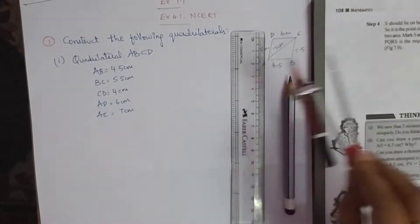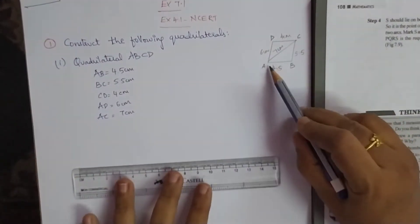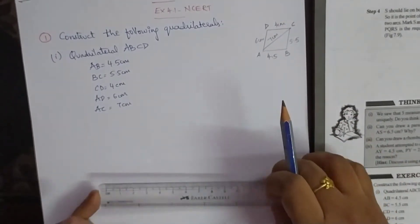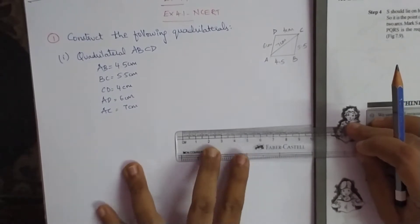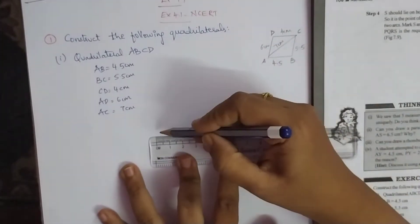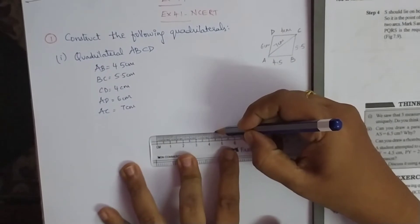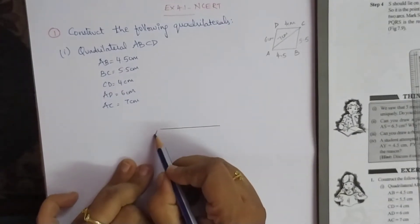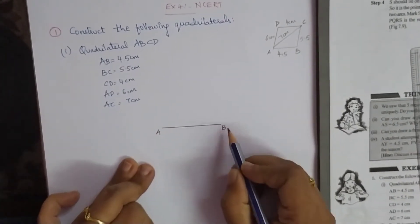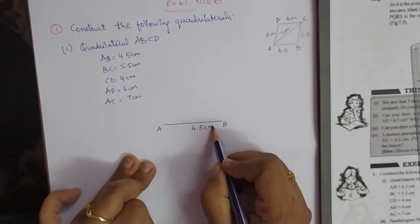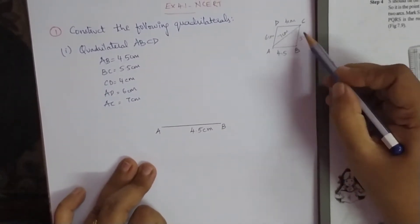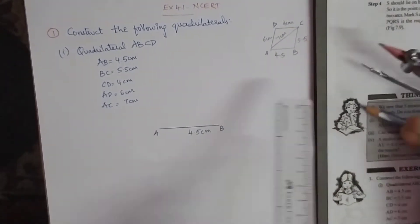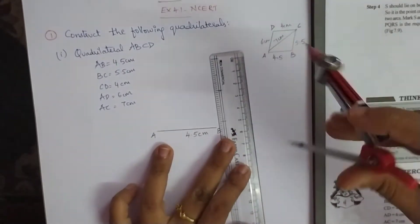Let us start the constructions. The bottom line base AB is 4.5 cm, so let us draw a base of 4.5 cm. When you draw, start the reading from 0 and draw till 4.5 cm. Sharpen your pencil so that what you are drawing is visible, neat, and clear. Write here as 4.5 cm. Now BC is 5.5, so let us take BC as 5.5.